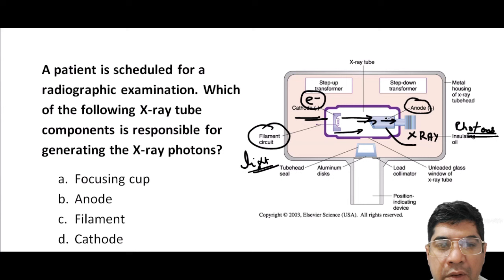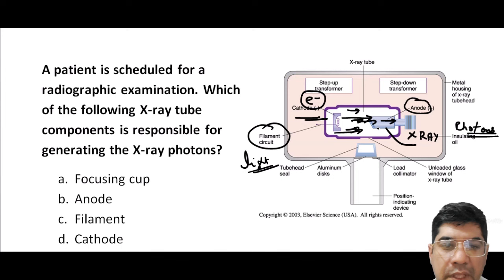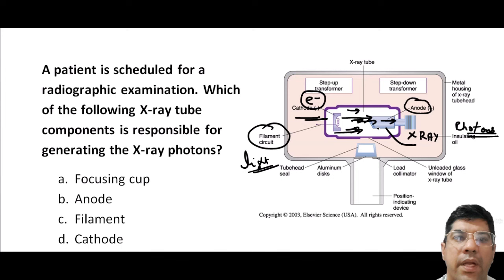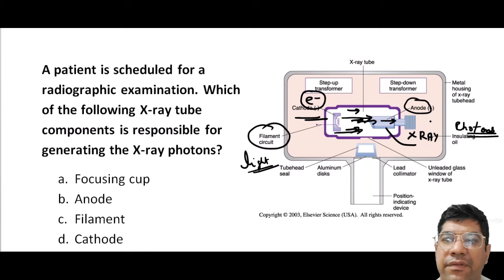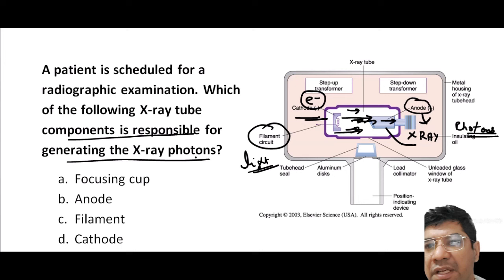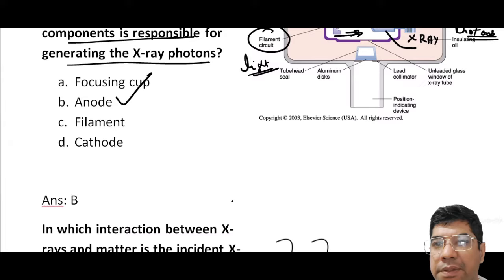The anode can be considered like a target board — when you throw arrows at this board, it produces a flash of light. In the case of x-rays, the electrons released from the cathode hit the anode and produce x-rays. So the anode is the x-ray component responsible for generating x-ray photons through interaction with the target material.